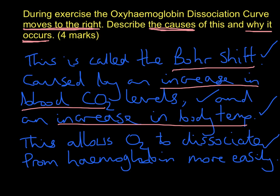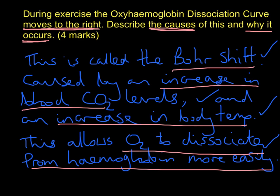So that is the classic four-mark answer: it allows O2 to dissociate from haemoglobin more easily - some people like to say 'more readily', which is also fantastic. Here's a top tip: remember those four points every time a question comes up on the oxyhemoglobin dissociation curve. The curve shifts to the right - called the Bohr shift - caused by an increase in blood CO2 levels and an increase in body temperature, and the result is that it allows oxygen to dissociate from haemoglobin more easily or more readily. Good luck with it, folks.